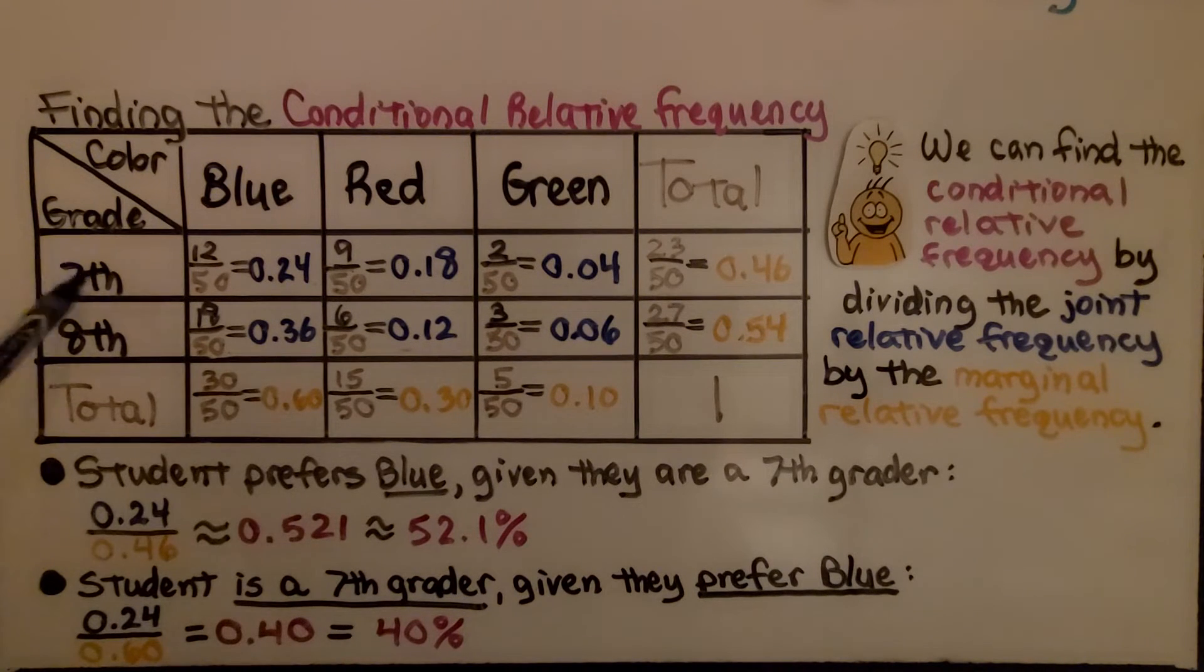And if a student is a seventh grader, given they prefer blue, we're going to do the zero point two four divided by zero point six zero, which, just like before, we get forty percent.